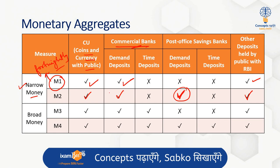M3 is also called the aggregate monetary resource or broad money supply. It includes coins and currency with the public, demand deposits with commercial banks, time deposits with commercial banks, and other deposits held by the public with the central bank. In other words, M3 equals M1 plus time deposits held with commercial banks.